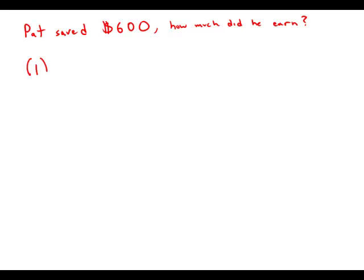Statement number one tells us Pat spent half his earnings for the last month on his living expenses and saved a third of the remainder. Let's say that capital E was his earnings, so he spent half of this, half of E, on his living expenses.